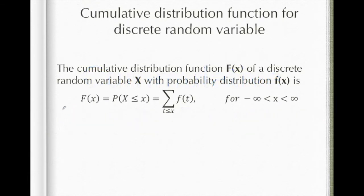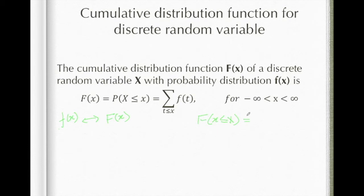Now let's look at the relationship between the probability distribution and the cumulative probability distribution. The relationship is that the probability of getting x less than or equal to a given value is called the cumulative probability density function.